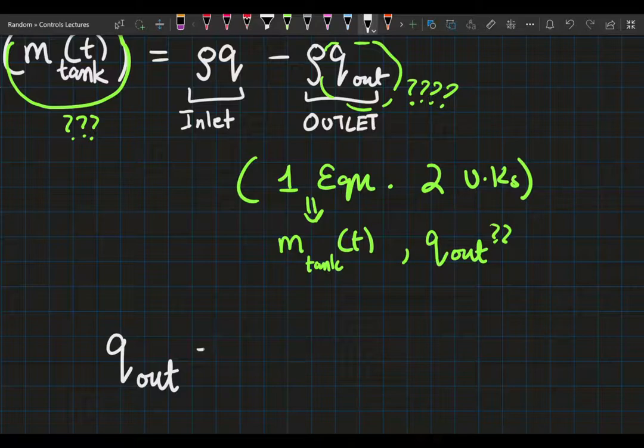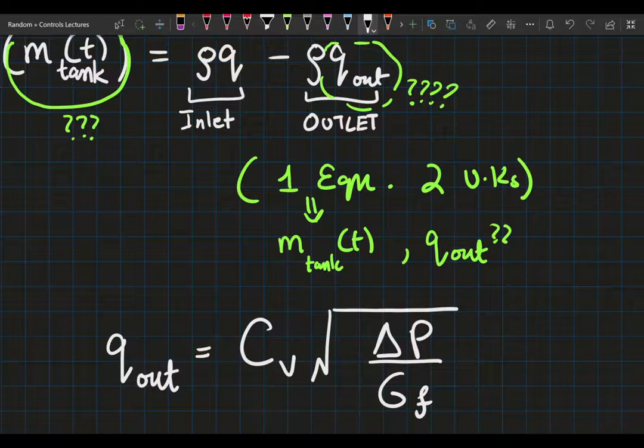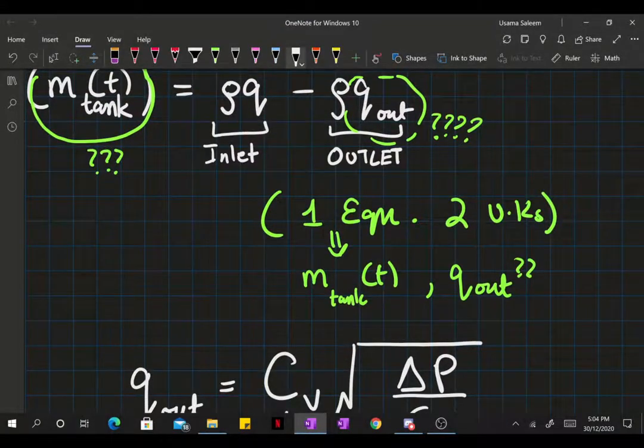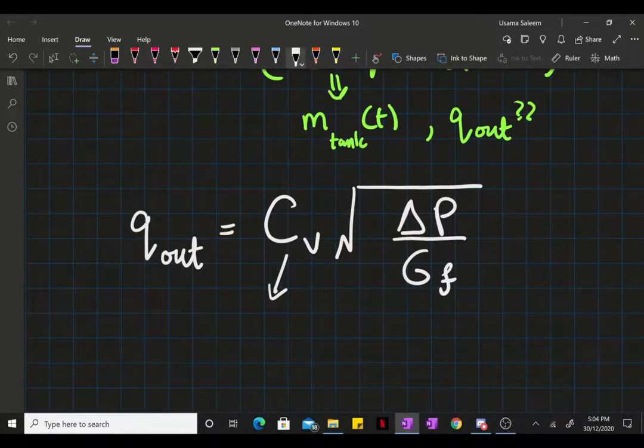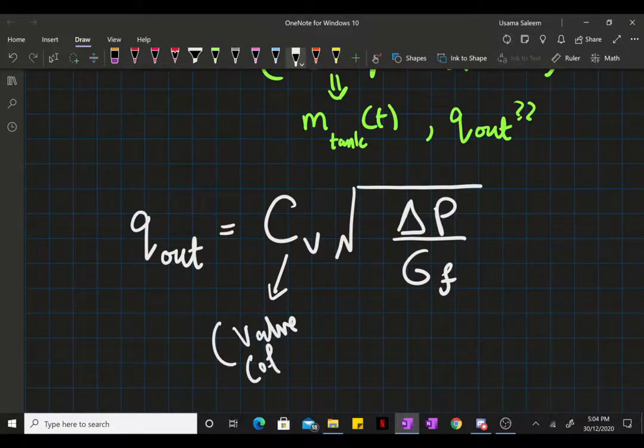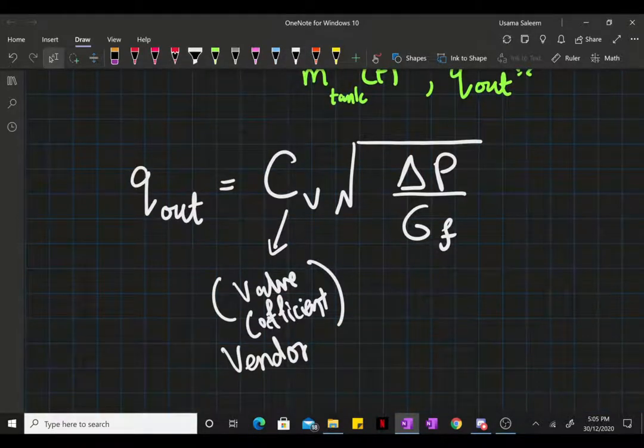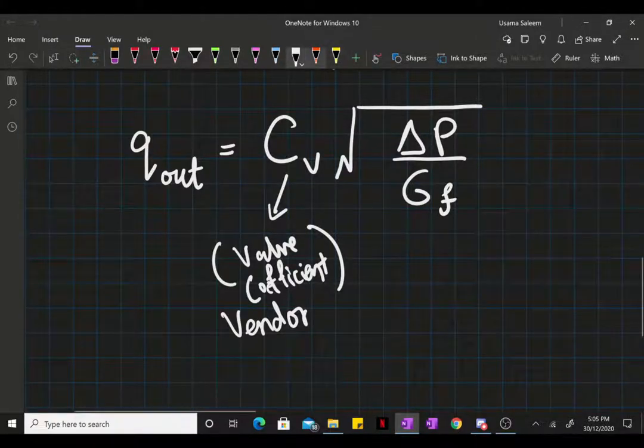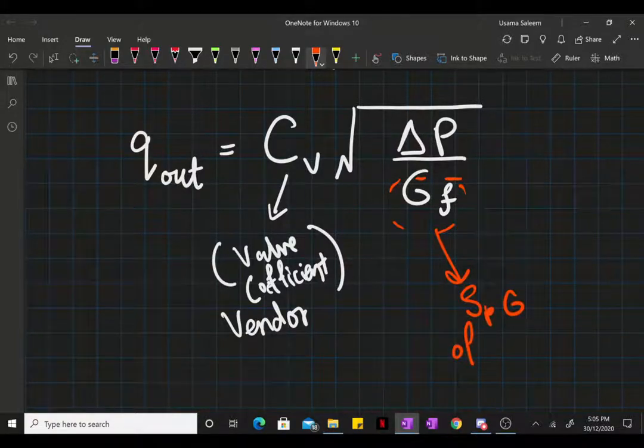Most commercial valves, their discharge flow rate, can be modeled by this concise and very simple equation. We have the valve coefficient, this will be given by the vendor, and the valve model characteristics are going to determine that. We have the specific gravity SG of the fluid that we have.